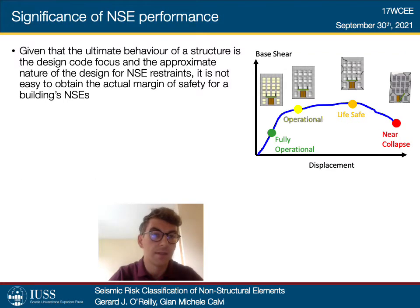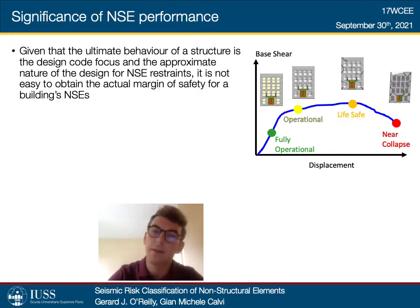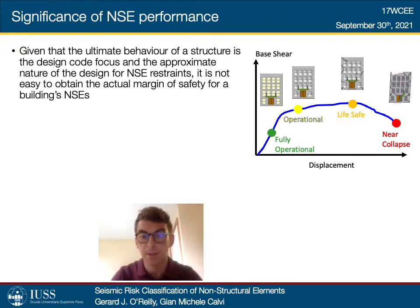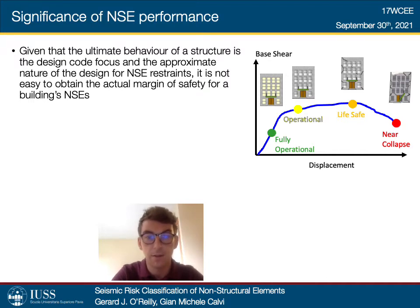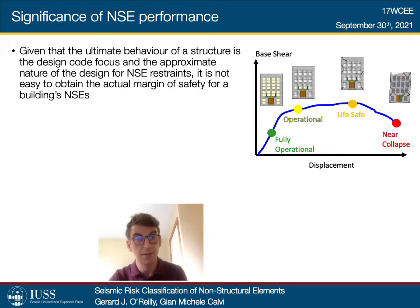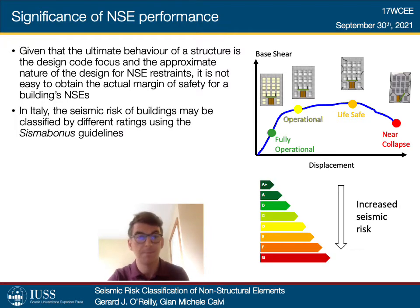What about the significance of these? Building codes typically focus on the ultimate limit state of a building — limiting collapse to protect occupants' lives — whereas the design and consideration of non-structural elements is a more secondary consideration. Once you have the building, you follow some rules to check there are no major issues with the non-structural elements. But following these general approaches, it's not easy to know the actual margin of safety for different kinds of elements with different kinds of risks, subject to different demand parameters like floor accelerations, displacement, or drift.